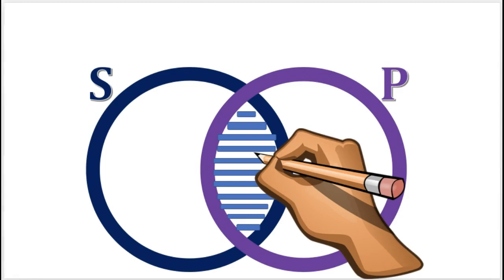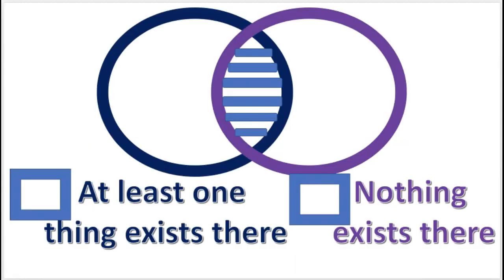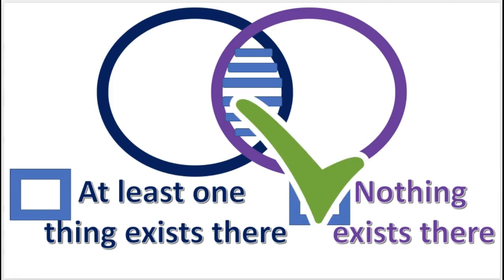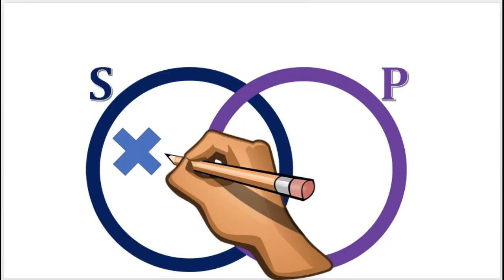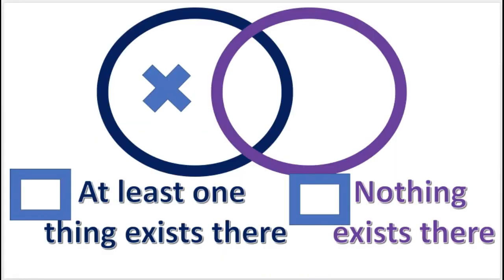What does the shaded area mean? Nothing exists in an area that is shaded. Next practice problem: what do you know about the area containing the X? An X in an area means at least one thing exists there. Good job on those practice problems.